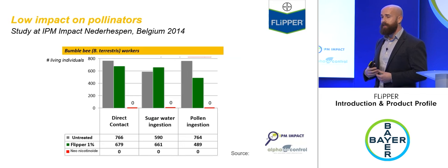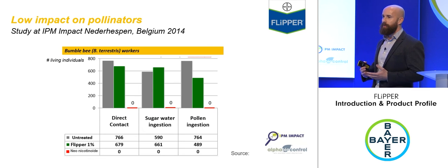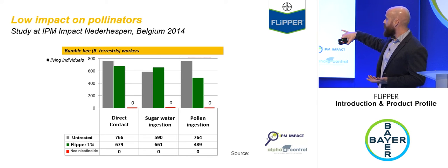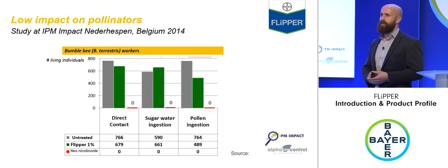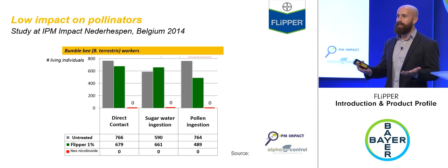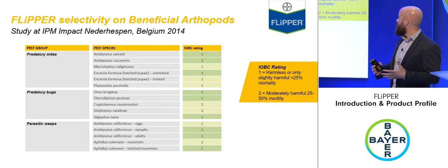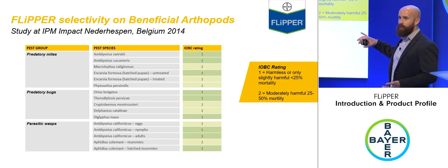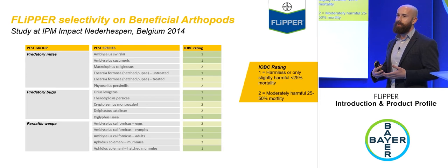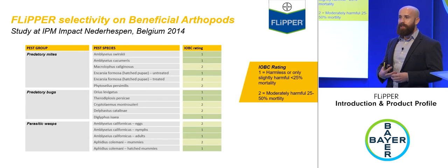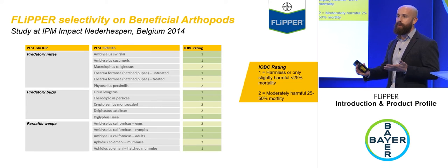Data produced for the product dossier with IPM Impact examined the effect of Flipper on worker bumblebees through different ingestion routes. Bumblebees were largely unaffected by Flipper compared to a neonicotinoid reference. Its IOBC rating of one or two confirms it has no unacceptable effect on major beneficial insects. For crops using beneficials, the recommendation is to apply Flipper and then release beneficial insects as soon as the crop has dried.